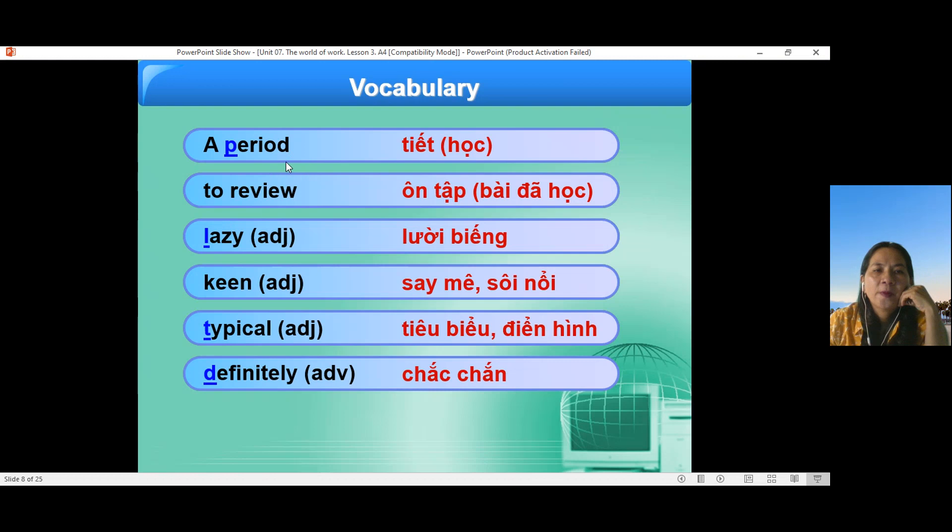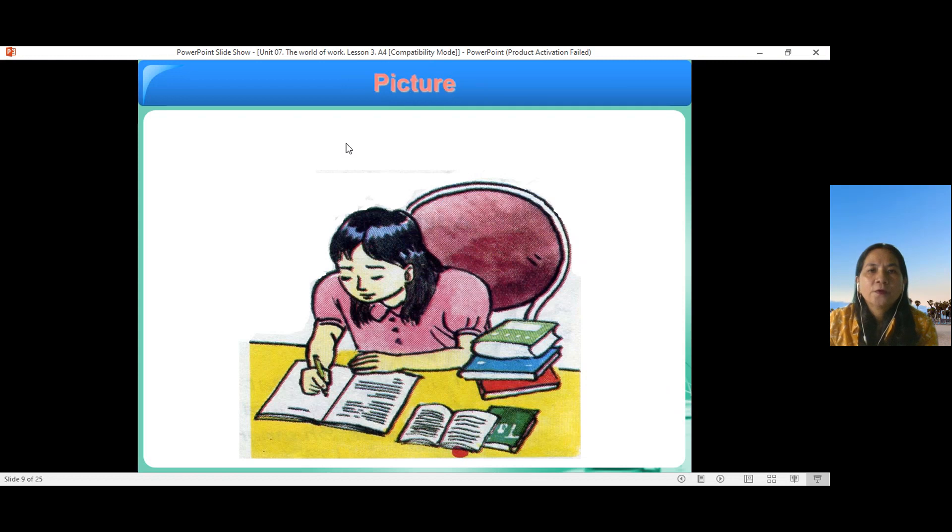Sau đó về nhà các bạn đọc lại những câu nha. Period. To review. Lazy. Keen. Typical. Definitely. Nào các bạn về nhà. Từ cho cô nha.